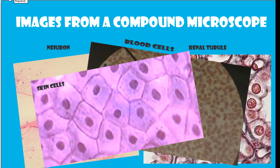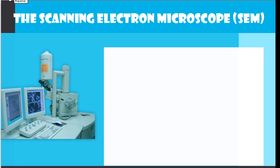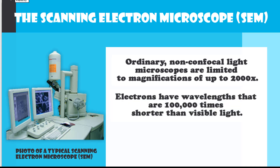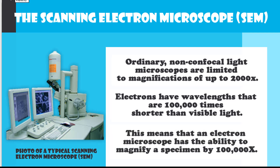The scanning electron microscope, or SEM. Ordinary non-confocal light microscopes are limited to magnifications of up to 2000x. Electrons have wavelengths that are 100,000 times shorter than visible light. This means that an electron microscope has the ability to magnify a specimen by 100,000 times.